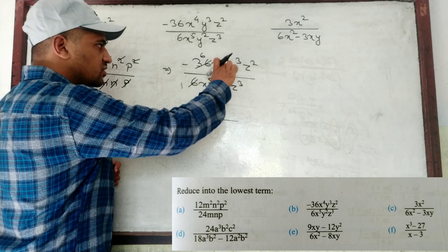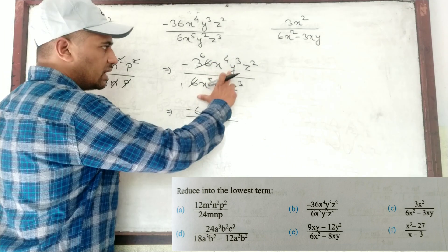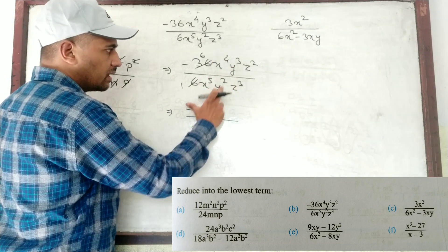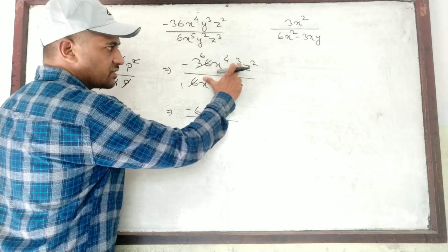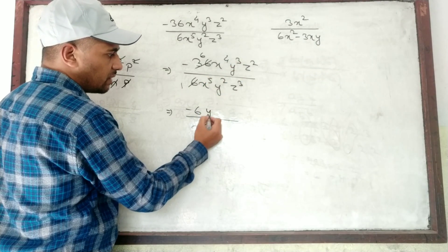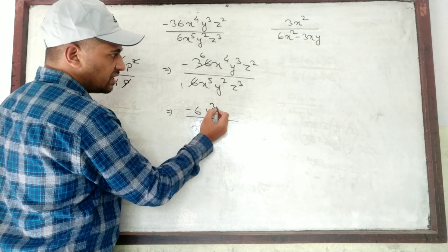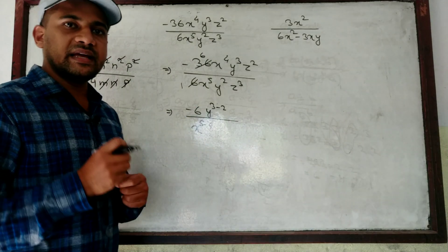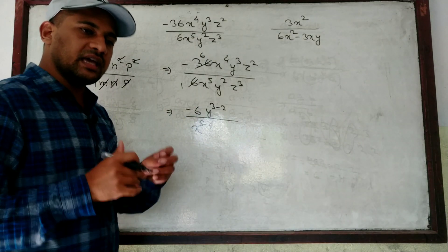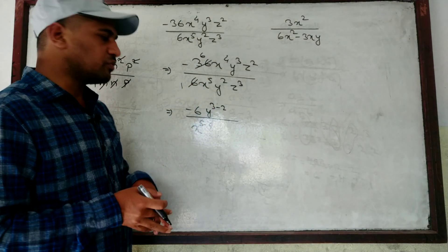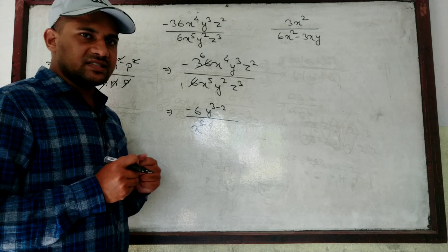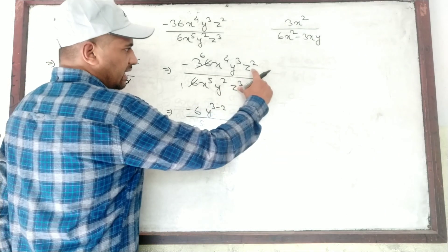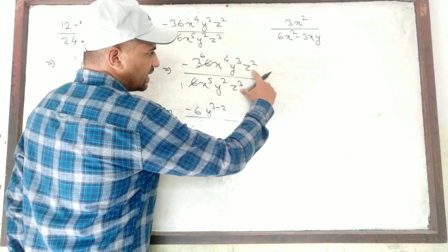Now for Y: base is same. In division we subtract the powers. Here we have Y² and Y³. Since 3 is greater, we write Y to the power 3 minus 2, taking the 2 upside. You can do it either way — if you take it down you get a negative, and you have to convert negative power to positive. Now look at Z: base is the same.